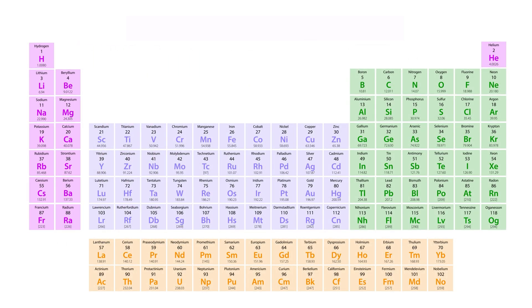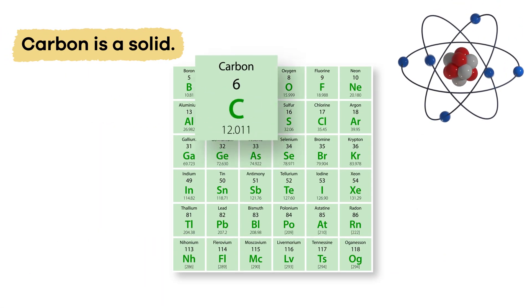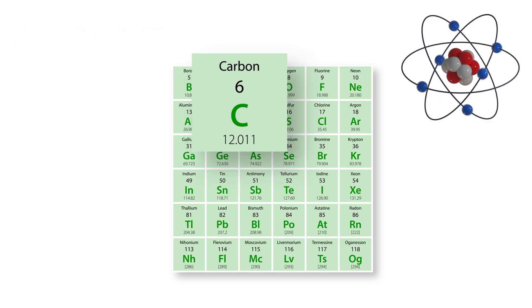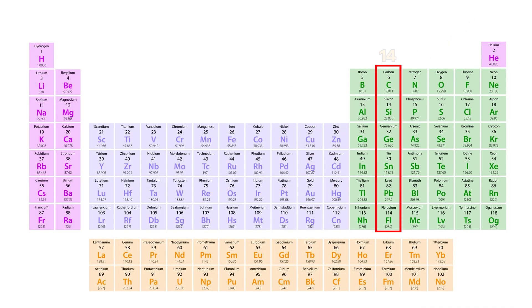Carbon, on the other hand, is a solid. Its symbol is C, its atomic number is 6, and its atomic weight is 12.011. Carbon is in group 14.